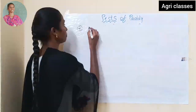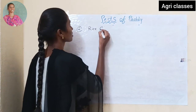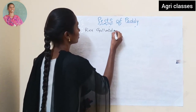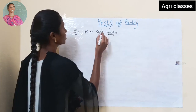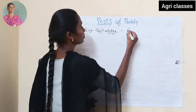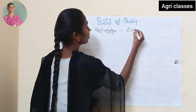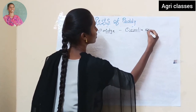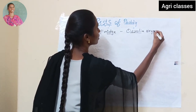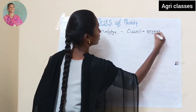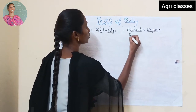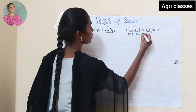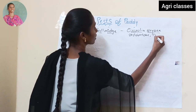Now we will discuss about Rice Gall Midge. The scientific name is Orseolia oryzae. The family is Cecidomyiidae and the order is Diptera.